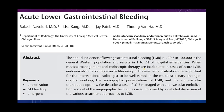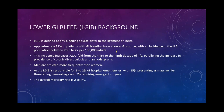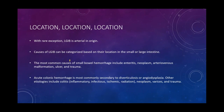Moving to acute lower GI bleeds: anything distal to the ligament of Treitz is generally a lower GI bleed. Overall mortality rates are 2-4%, accounting for 1-2% of hospital emergencies. 15% can present as massive, life-threatening bleeds, and 5% may require emergent surgery. Lower GI bleeds can be categorized as small intestine or large intestine. Common small bowel causes include enteritis, neoplasm, AV malformations, ulcers, and trauma. In the colon, diverticulosis and angiodysplasia predominate.